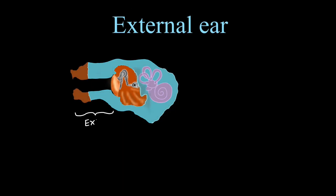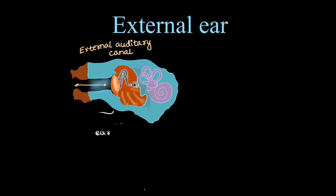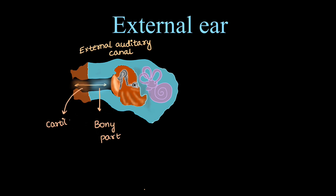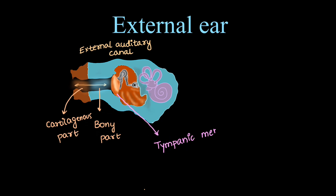Coming to the external ear, we will see its components on illustrations first. This is the external auditory canal, which is made up of two portions: one covered with bone — the bony part of the external auditory canal — and one covered with cartilage — the cartilaginous part of the external auditory canal.